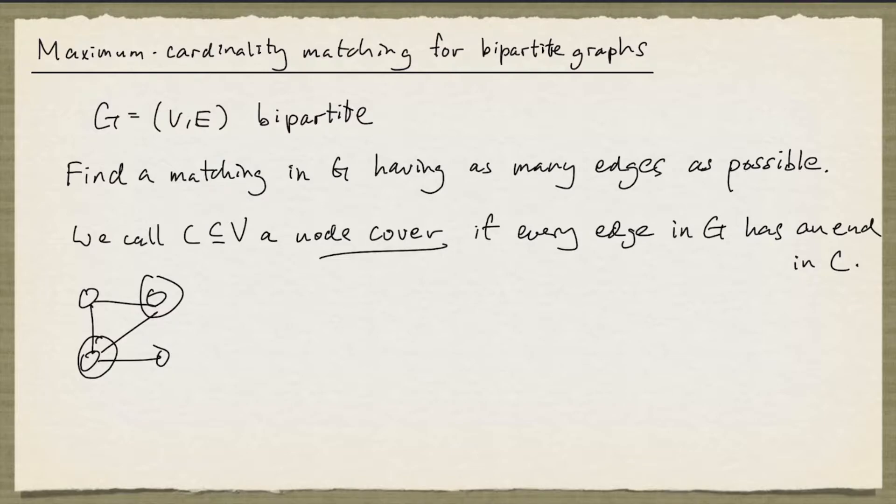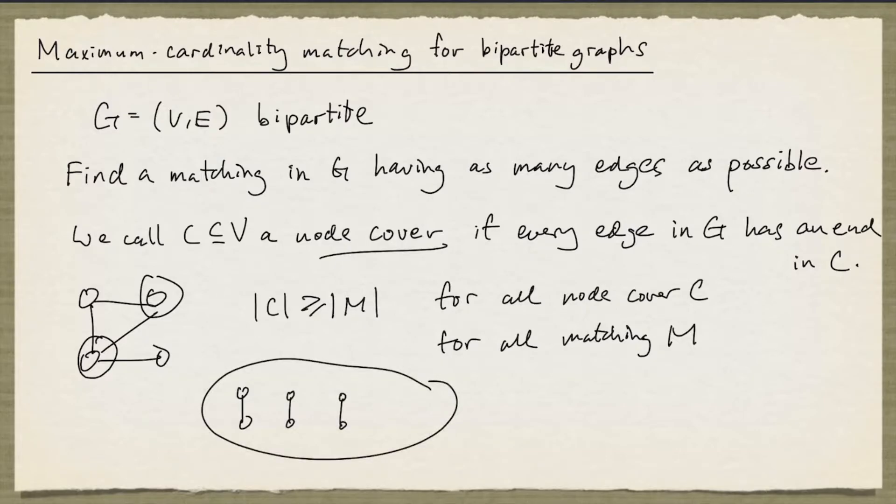An immediate consequence of this definition is that the cardinality of a node cover must be at least the cardinality of any matching M. And the reason is this. Say you have a matching.